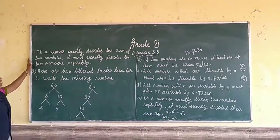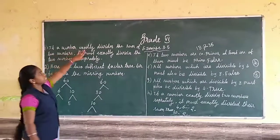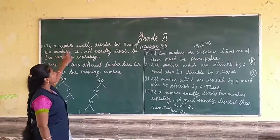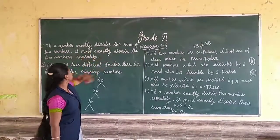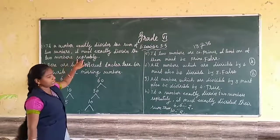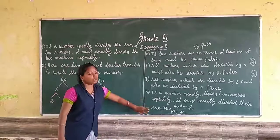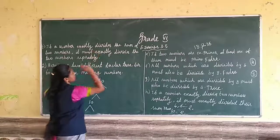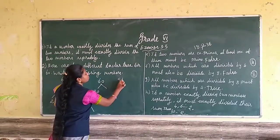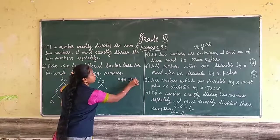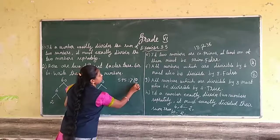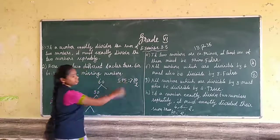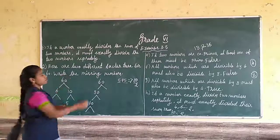Next statement: if a number exactly divides the sum of two numbers, it must exactly divide the two numbers separately. For this, I take 5 plus 5, which gives 10. This 10 is divisible by 2. But 5 is not divisible by 2. So this statement is false.